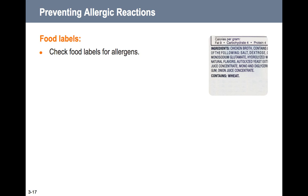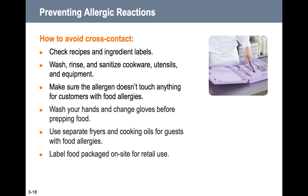It's also important to check the labels of food to see if there are any allergens before using that item for someone with an allergen concern. To avoid cross-contact: check recipes and ingredient labels, wash, rinse, and sanitize cookware, utensils, and equipment, and make sure the allergen doesn't touch anything intended for customers with food allergies.